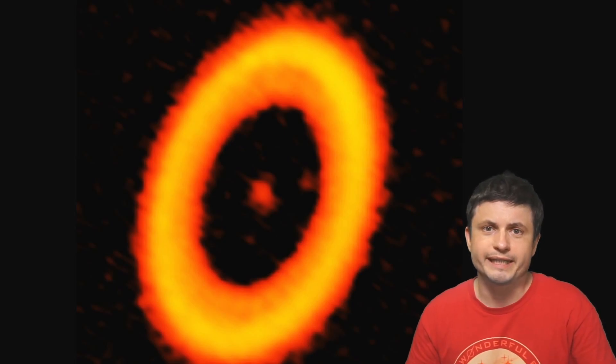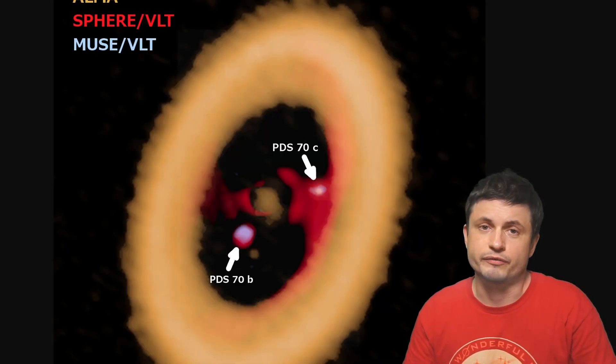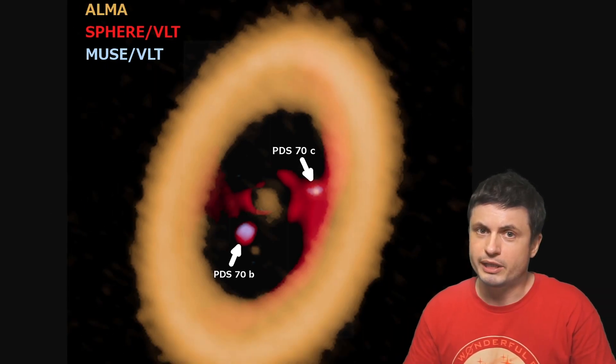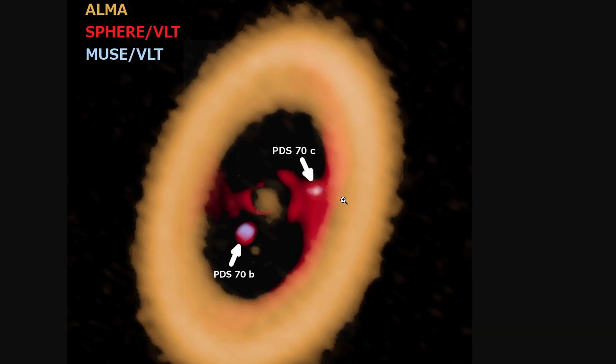But one of the most exciting such star systems for the past few years was this one, PDS-70. Exciting because of these detections from the last few years. First, a few years ago, we talked about the discovery of a first planet, then the second planet, and then unusual observations around this planet known as PDS-70C.